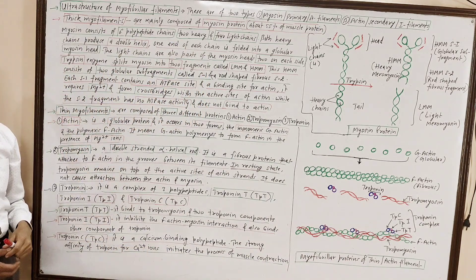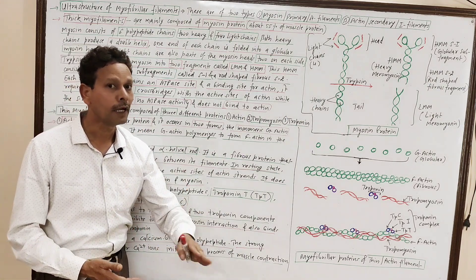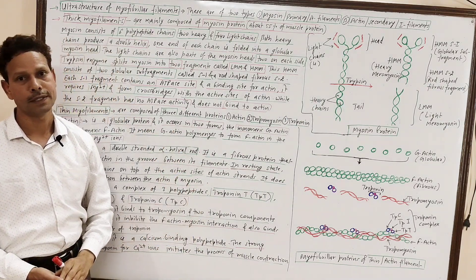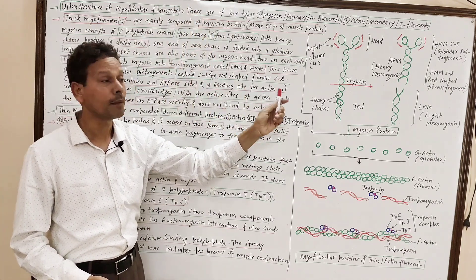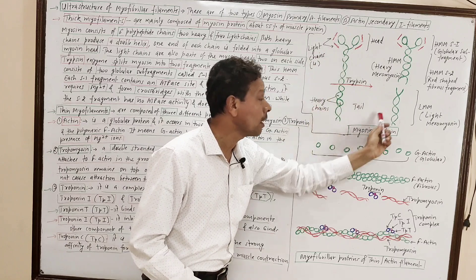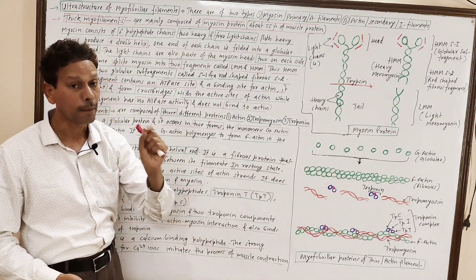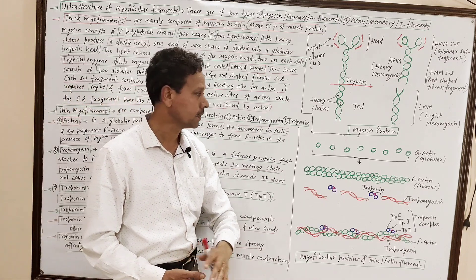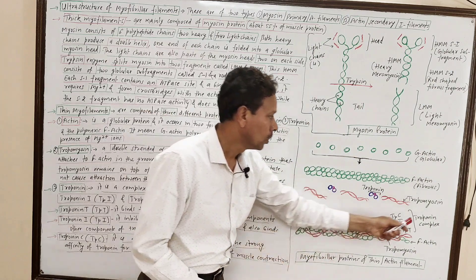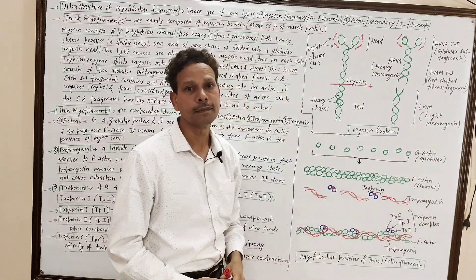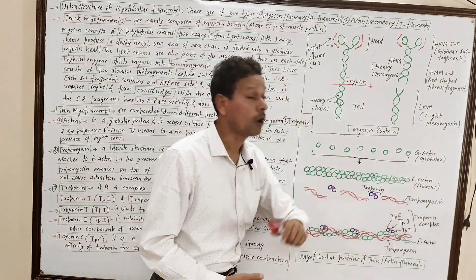Thin myofilaments are made up of 3 types of proteins. Thick myofilaments are mainly composed of myosin proteins, but thin myofilaments are composed of 3 types of proteins: actin protein, tropomyosin protein, and the third one is troponin.